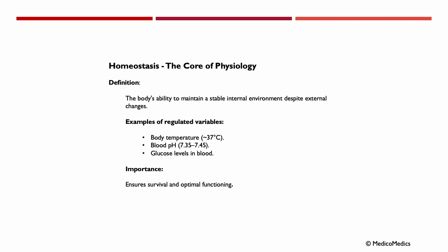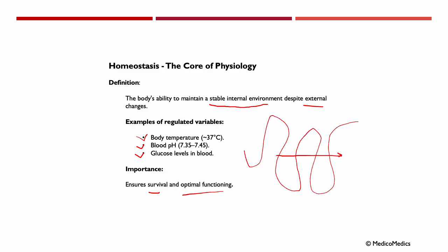Homeostasis is the body's ability to maintain a stable internal environment despite external changes. Some examples of regulated variables include body temperature, blood pH, and glucose levels in the blood. This ensures survival and optimal functioning. Homeostasis is like being on cruise control — it keeps your body steady no matter what is going on around you.